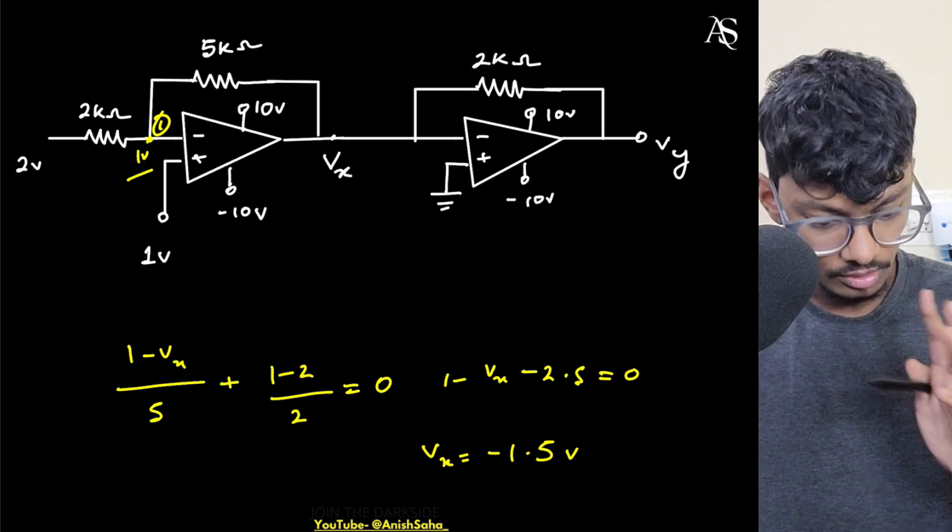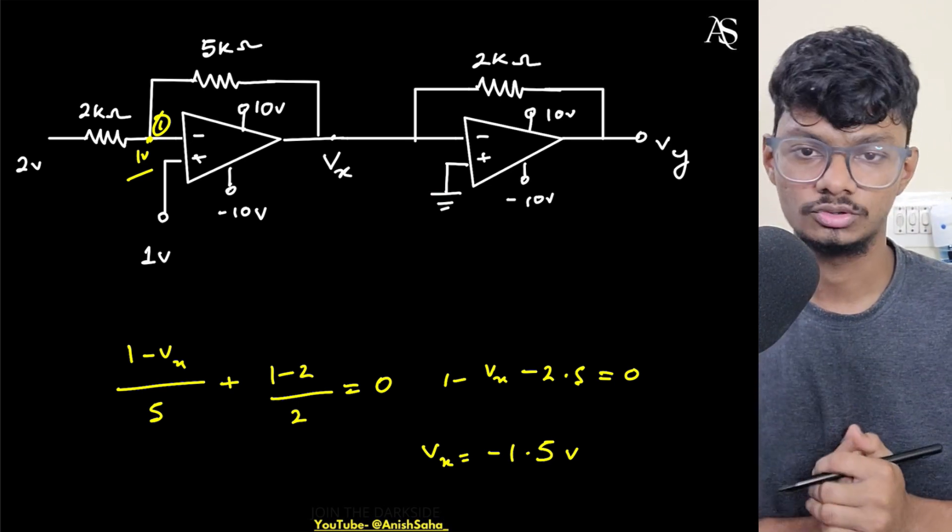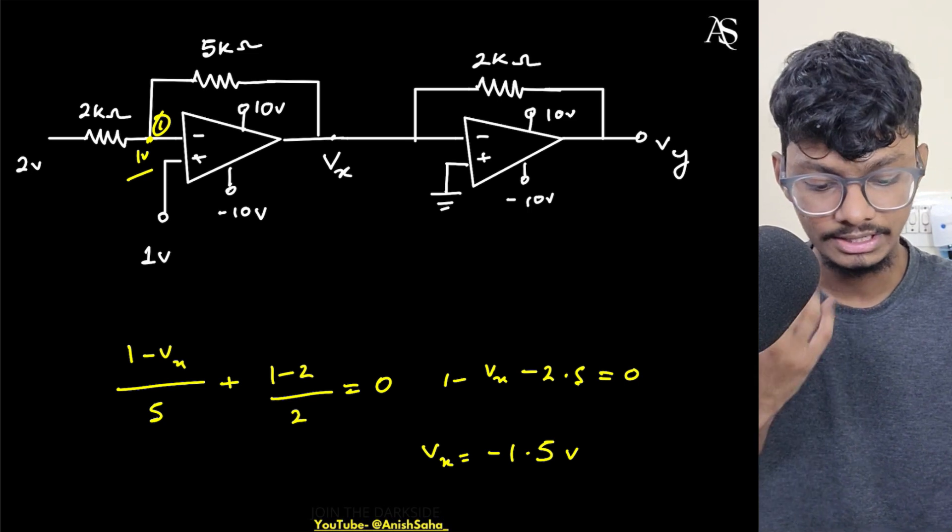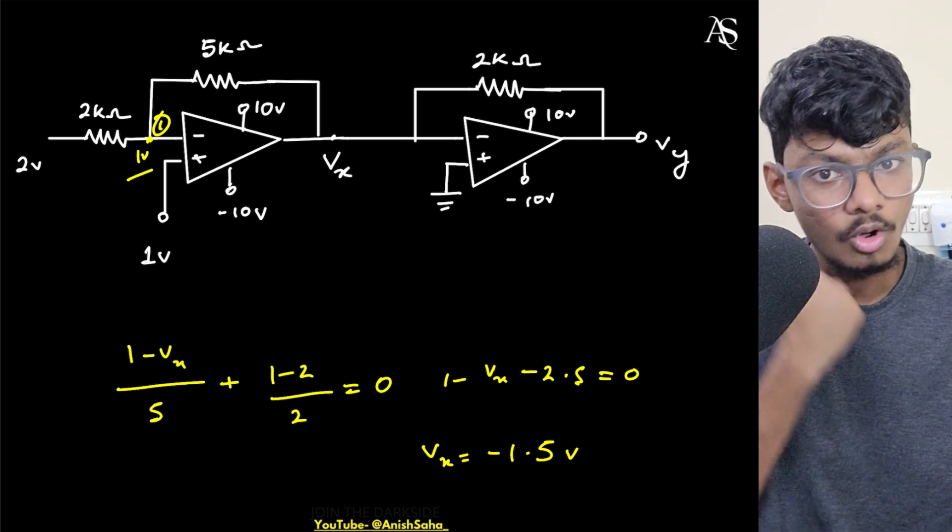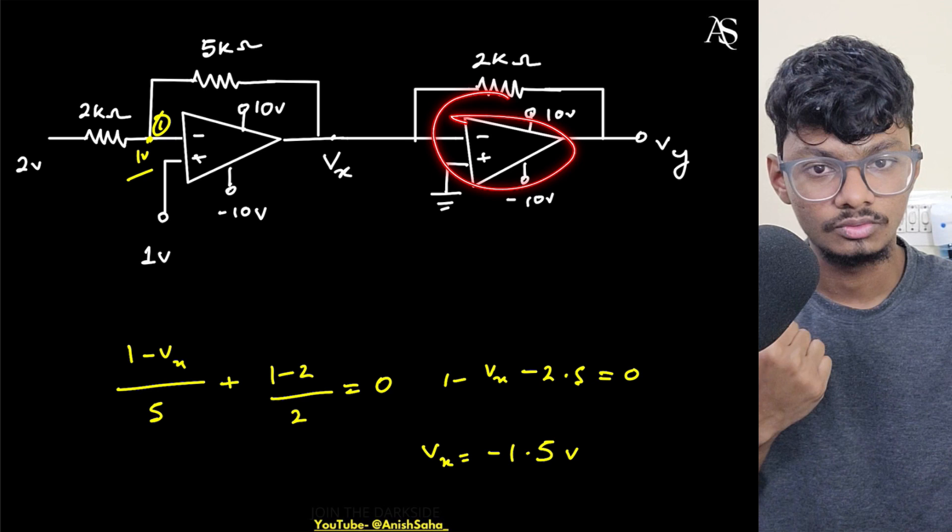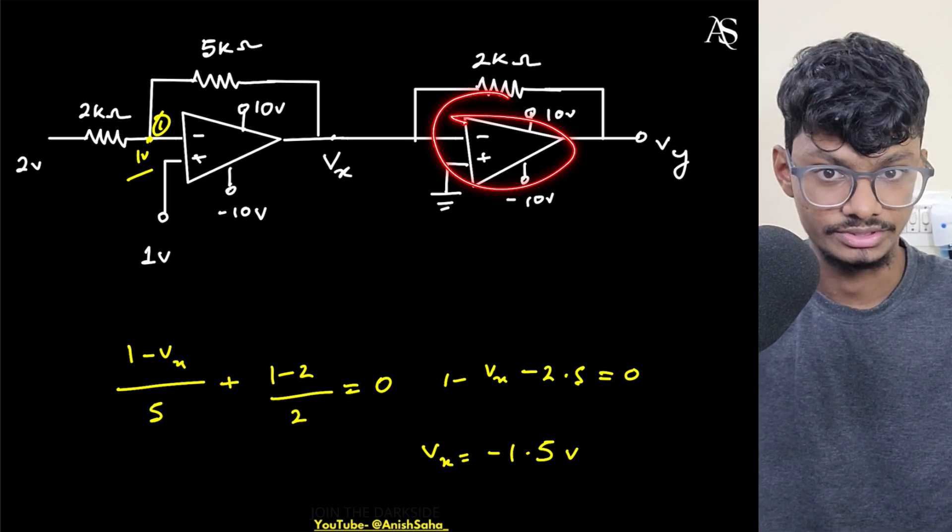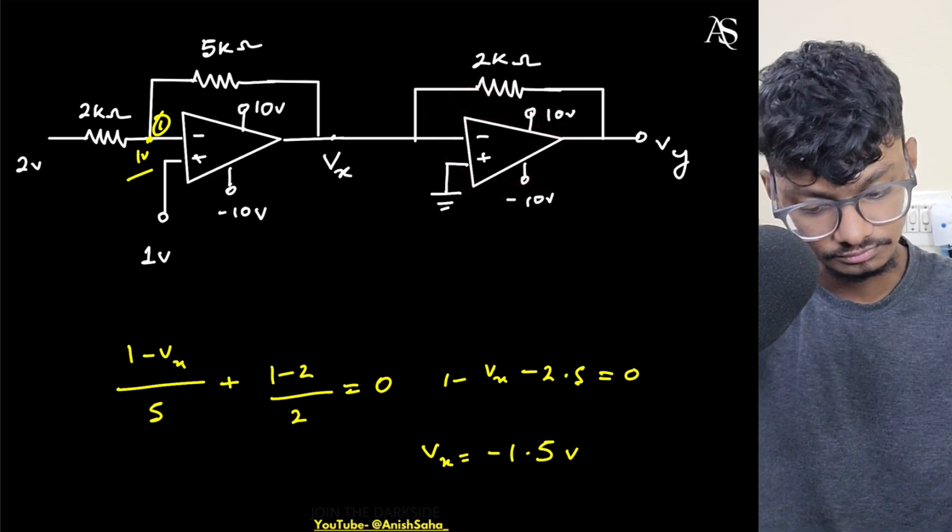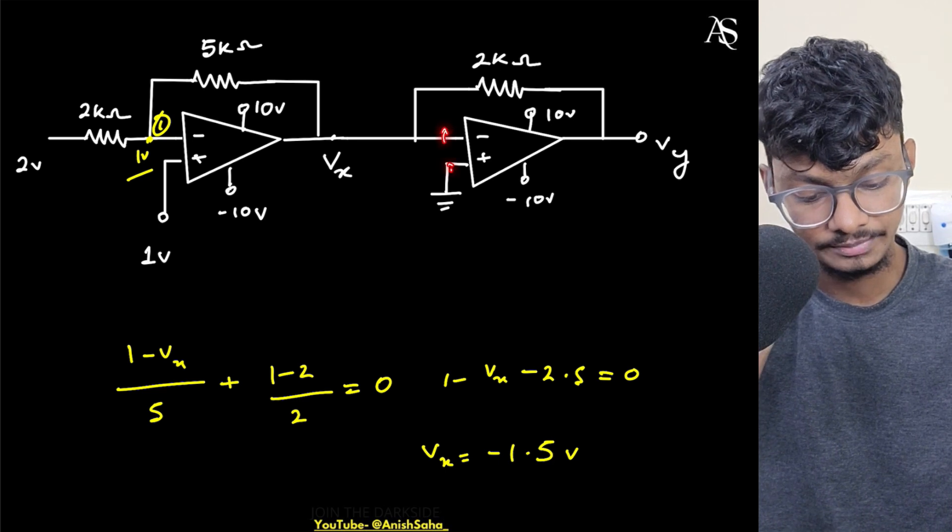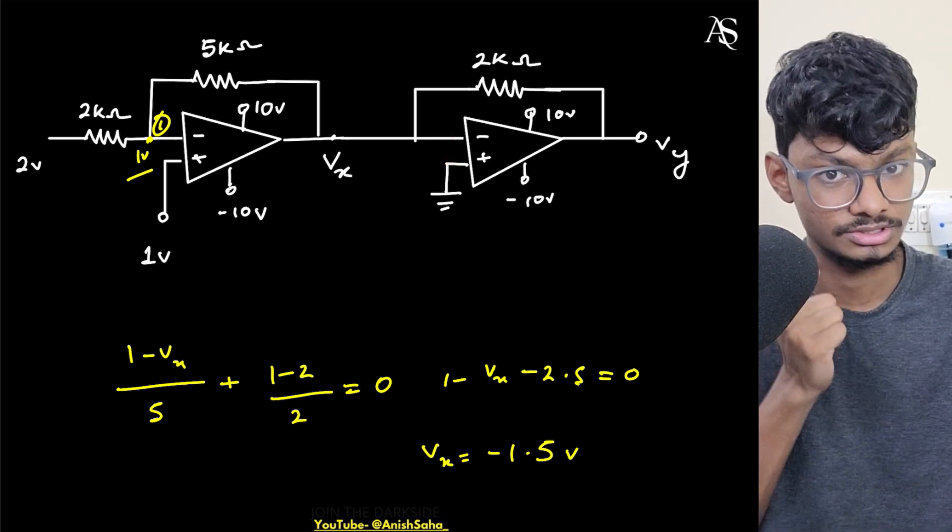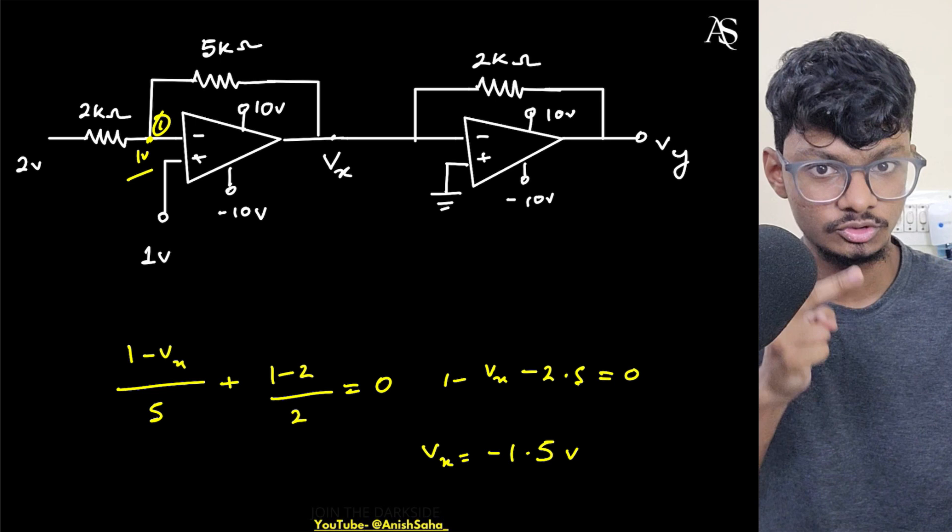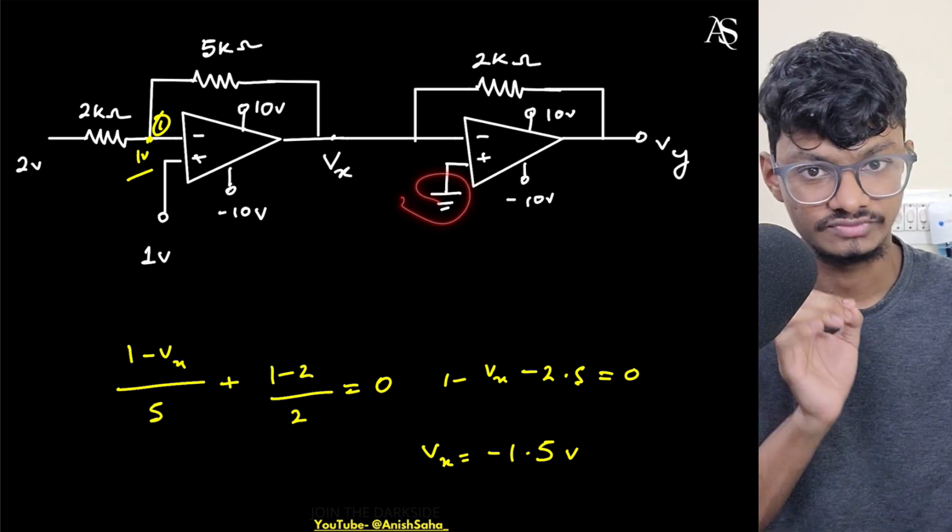Whenever we apply virtual ground concept right, we don't take care of this but we should really consider that we can apply virtual ground concept only when the op amp is ideal and it has not reached saturation, and also the terminals of both the op amps are not fixed to some voltage. Right? Both of the op amps should not be fixed. So if one of them is fixed, that is fine. But if both of the terminals of the op amp input terminals of the op amp are fixed, that means it will act as a comparator.